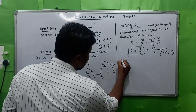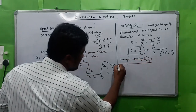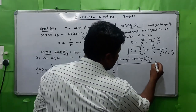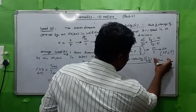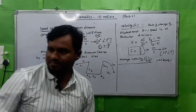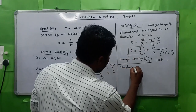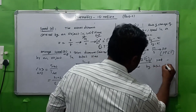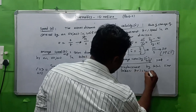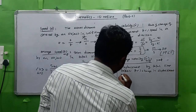Coming to average velocity. Average velocity V̄_avg can be defined as the change in displacement — that is, net displacement — divided by total time taken.